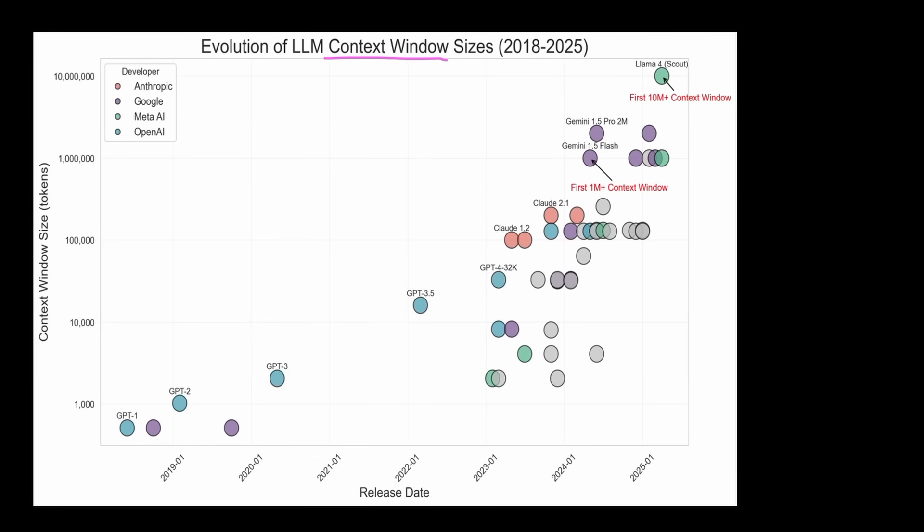For example, we know that context window has been drastically increasing over time to the point where state-of-the-art models today take up to 1 million context window. But this increase in context window comes at a price. Calculating attention for this much context length takes a lot of computation. And computation grows more as the context window grows, more specifically in O of N squared complexity.